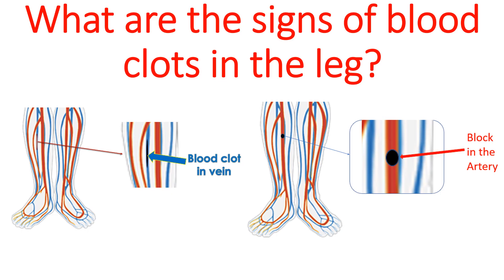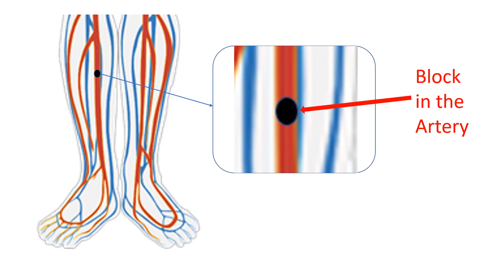If the occlusion of the artery persists for a long period, the limb will become black with death of cells, called gangrene. This occurs when the block occurs abruptly. In a gradually progressing obstruction, one first notes pain in the legs on walking, or claudication.